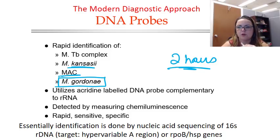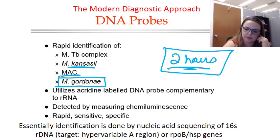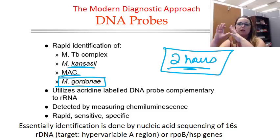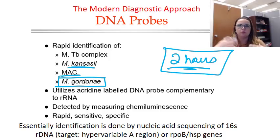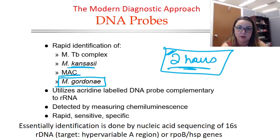Even though culture is still the gold standard, DNA probes are an incredible aid in quick identification. At Rush, we see about 12 TB patients per year, but we actually put a lot more in isolation on suspicion of TB while we rule them out. We don't want to rule people out too quickly, but we don't want to keep them in isolation longer than necessary. So two hours to see if it's actually TB while keeping everybody safe is actually pretty good.